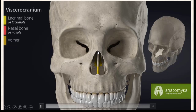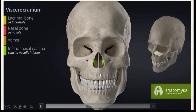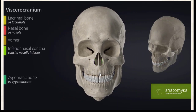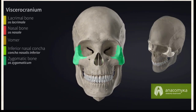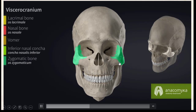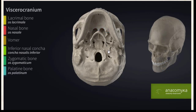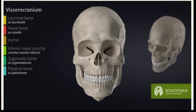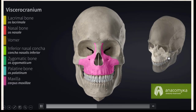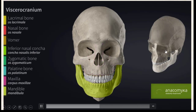Continuing the skull bones: the vomer, the inferior nasal concha, the zygomatic bone which exists beside the eye, the palatine bone, the maxilla existing in the upper jaw, and the mandible or lower jaw. Also included is the hyoid bone.